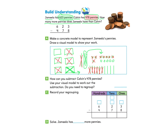So we can answer: Do you need to regroup? Yes, absolutely we do — and we did regroup. What was our final answer? We have 5 ones, 4 tens left over, and 1 hundred. So our answer is going to be 145.